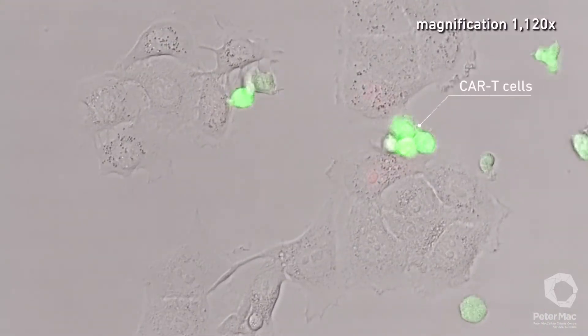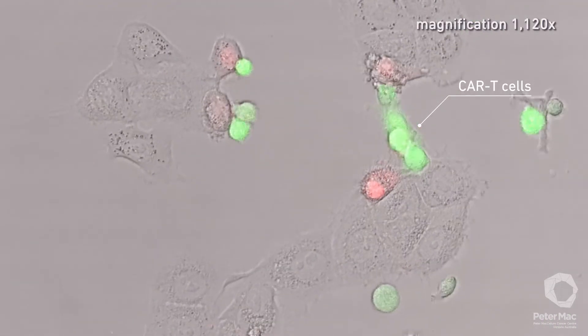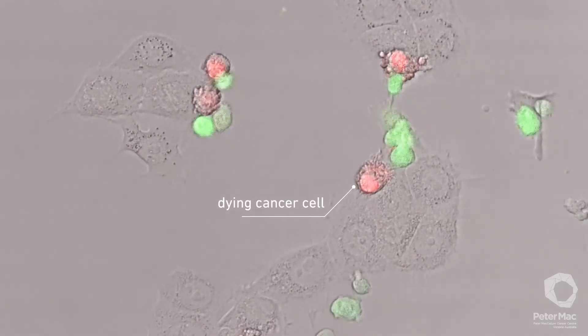Once activated, the green CAR T-cells release toxic chemicals into the cancer cells which kills them, indicated in red.